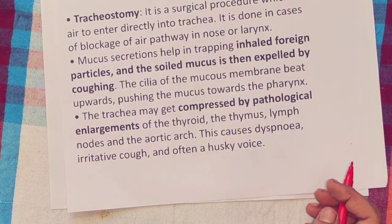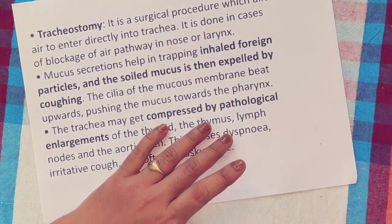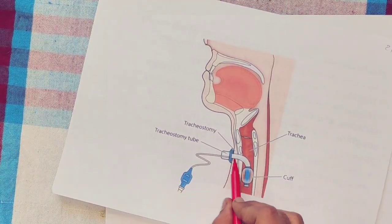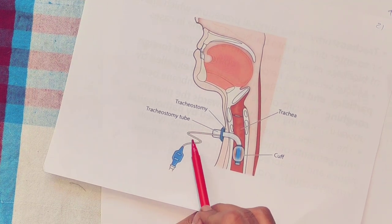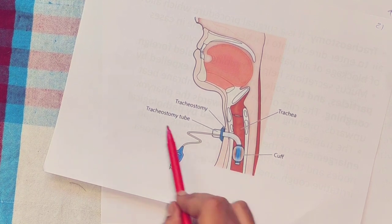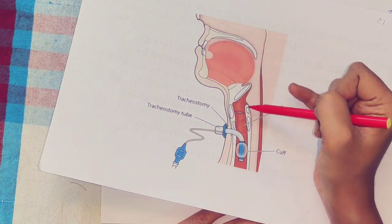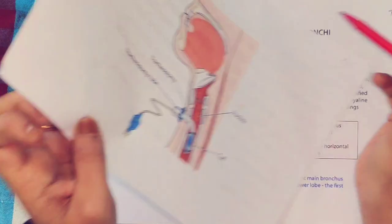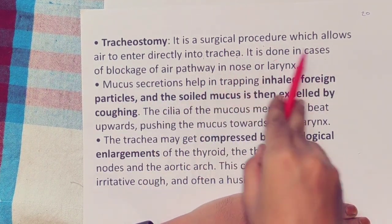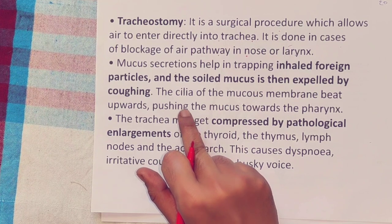Tracheostomy: this is a surgical procedure performed when there is a blockage of the upper respiratory tract. A tracheostomy tube is inserted directly into the trachea so that inspiration and expiration can take place through it. It is a surgical procedure that allows air to enter directly into the trachea in cases of blockage of the airway in the nose or larynx.